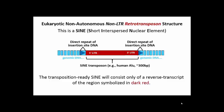SINEs, or short interspersed nuclear elements, are non-autonomous, non-LTR retrotransposons. They are sometimes called retroposons, removing the trans prefix. This refers to the fact that SINEs encode no enzymes and can't transpose on their own.